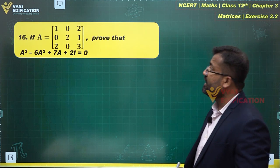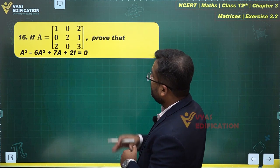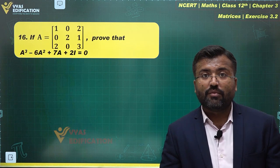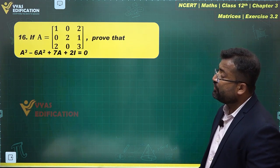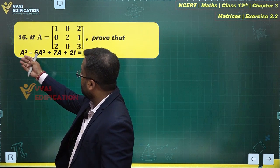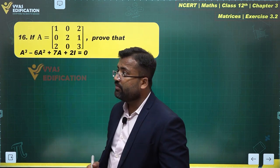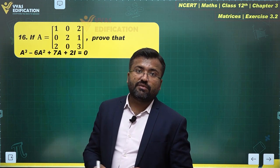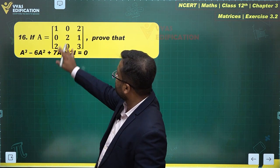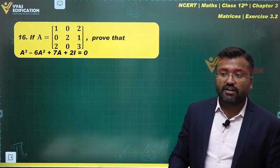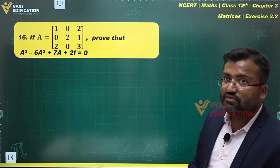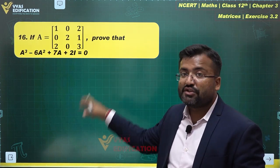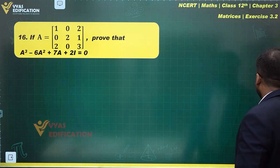Let us solve this question. If A equals this matrix, prove that A³ - 6A² + 7A + 2I = 0. To prove this, we need to find A² and A³. We'll find A² first, then A³, and then substitute them into the expression. I is the identity matrix of third order.